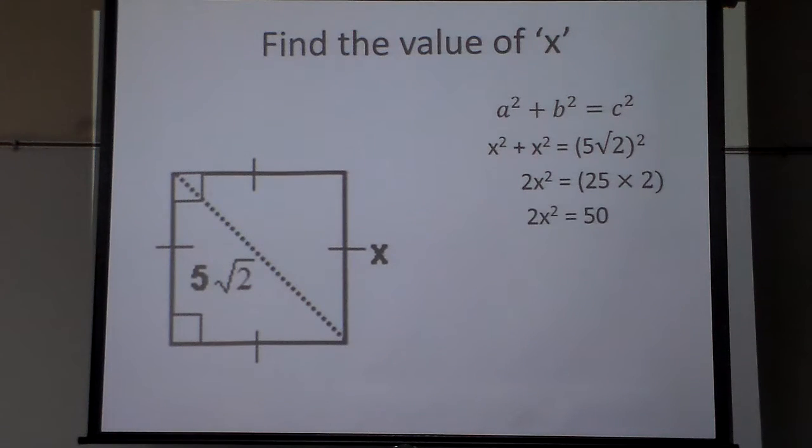All right? And that means 2x squared equals 50. And what can I do to solve? If that was an x, wouldn't I divide by 2? I'm going to do the same thing.